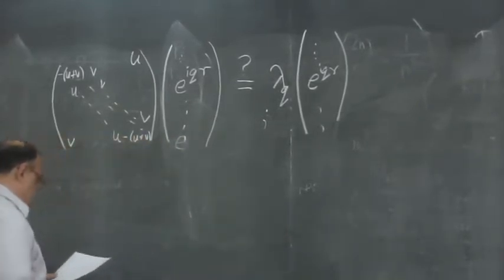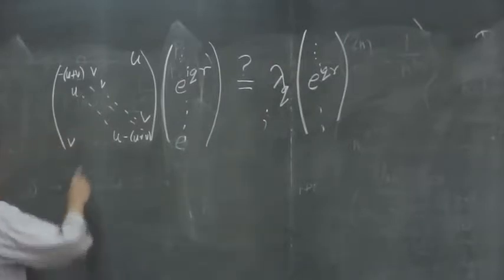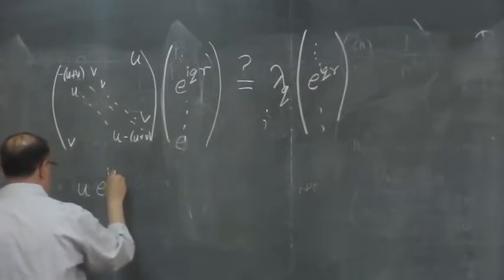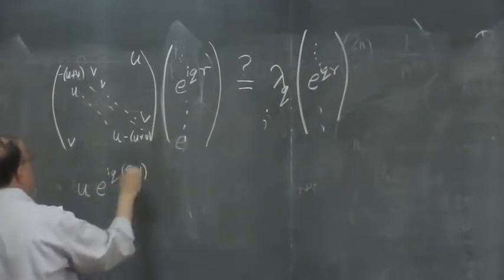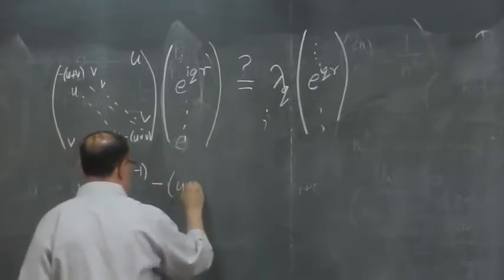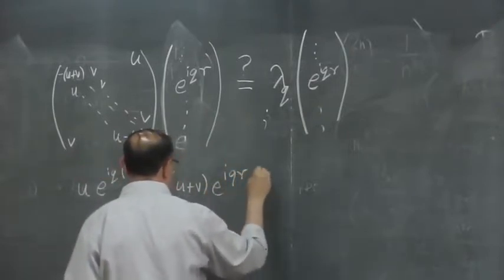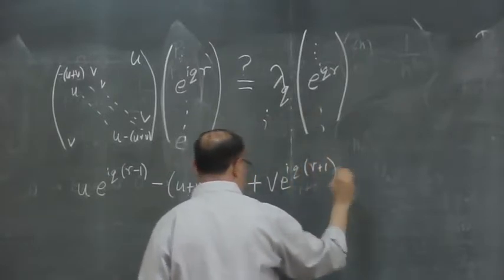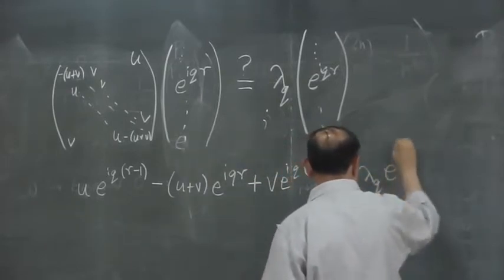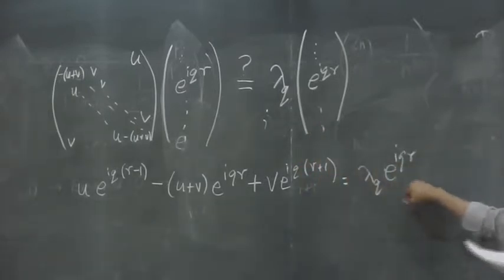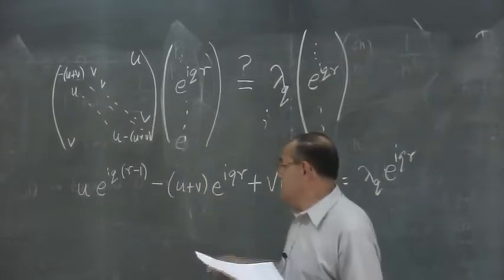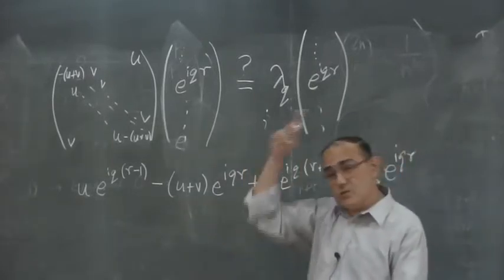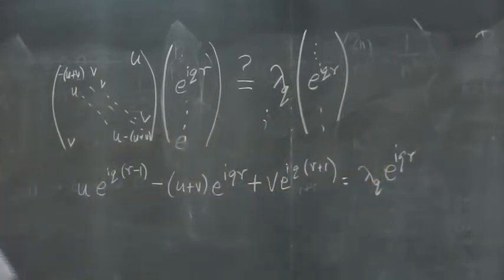Because when you multiply out, what will you get? You will verify that the eigenvalue equation gives u times e^(iq(r-1)) plus (1 - u - v) times e^(iqr) plus v times e^(iq(r+1)) equals lambda_q times e^(iqr). Of course, the easiest step to spot is the diagonal term. A right step from the previous site will bring you to r, or a left step from the next site. You can go back to the equation and write what it is. Fortunately, e^(iqr) cancels out.